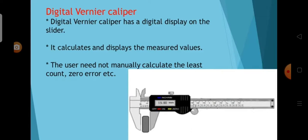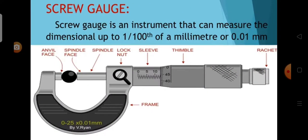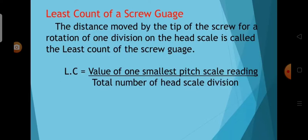Next one is the Digital Vernier Caliper. Digital Vernier Caliper has a digital display on the slider. It calculates and displays the measured values. The user need not manually calculate the least count, zero error, etc. Next one is the Screw Gauge. Screw Gauge is an instrument that can measure dimensions up to 1/100 of a millimetre, or 0.01 millimetre. The least count of the Screw Gauge equals the value of one smallest pitch scale reading divided by the total number of head scale divisions.